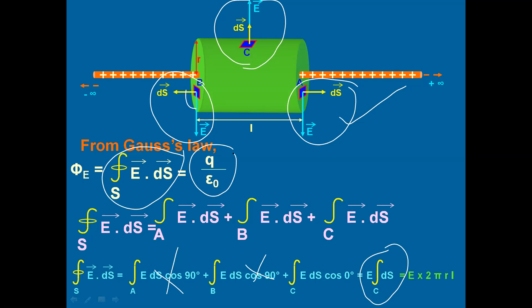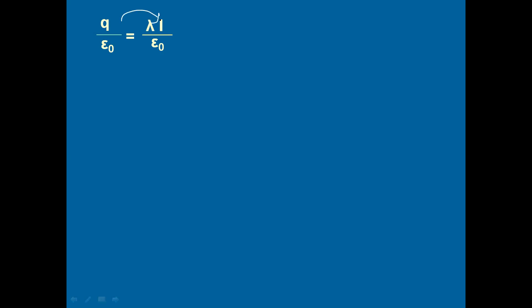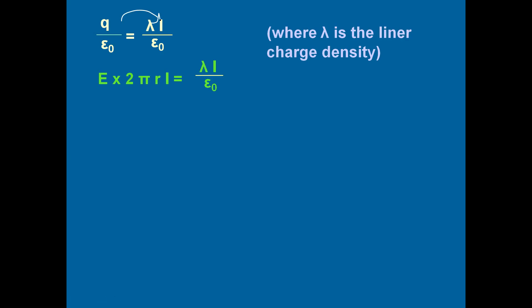Now we find the value of q/ε₀ and equate. We know q = λl, so q/ε₀ = λl/ε₀. Equating E × 2πrl = λl/ε₀, the l cancels from both sides. Rearranging, we get E = λ/(2πε₀r), or equivalently E = 1/(4πε₀) × 2λ/r. This is the electric field due to an infinitely long straight conductor — one of the very important derivations as far as board exams are concerned.